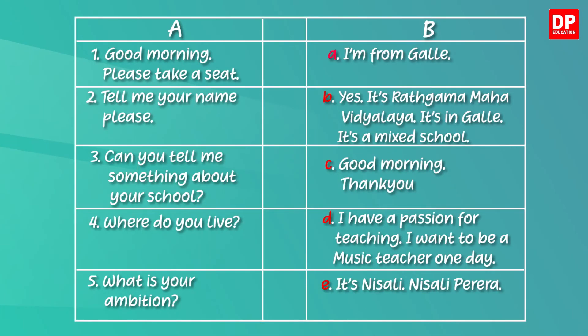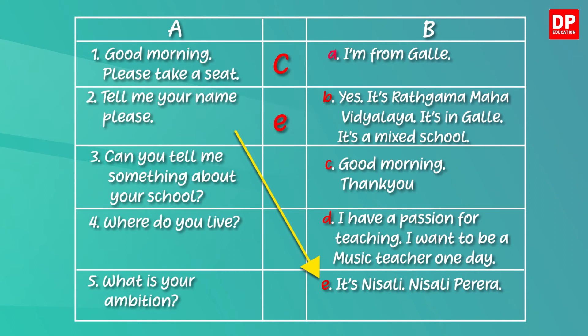Let's see how you have done it. The first one: the examiner greets the student and asks her to sit down. What can be the student's response to that? It should be C — the student greets back and says thank you. Now let's check the second one. Here the examiner asks for the student's name. The answer is E — Nisali Pereira.